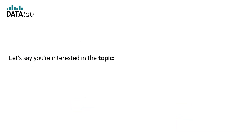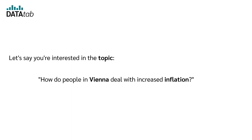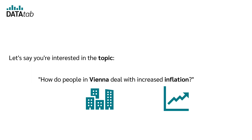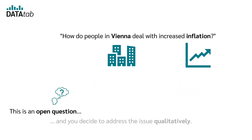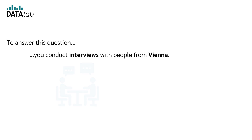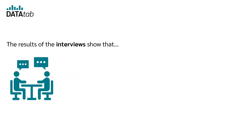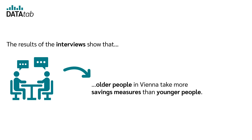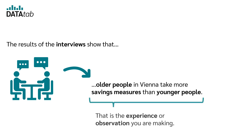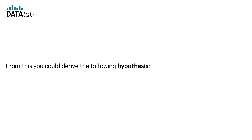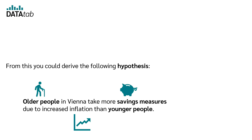Let's look at an example. Say you're interested in the topic: how do people in Vienna deal with increased inflation? This is an open question, so you decide to address the issue qualitatively. To answer it, you conduct interviews with people from Vienna. The results show that older people in Vienna take more savings measures than younger people — that is the observation you're making. From this you could derive the hypothesis: older people in Vienna take more savings measures due to increased inflation than younger people.